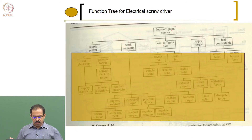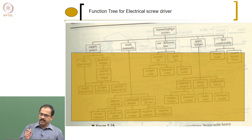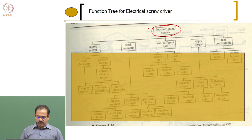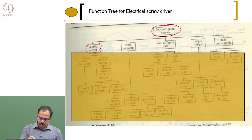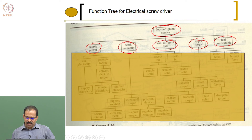Here is an example of a function tree for an electrical screwdriver. The top-level function is loosen or tighten screws. Sub-functions needed include: supply power, work manually, use different bits, apply torque, and feel comfortable. Feel comfortable relates to user-friendliness requirements from the customer.